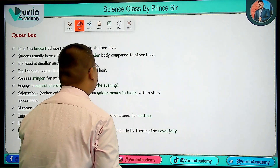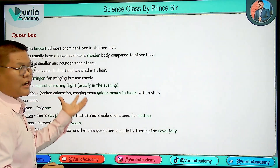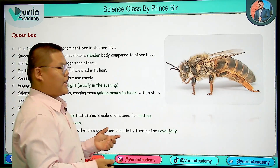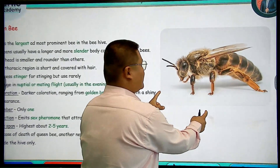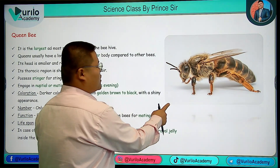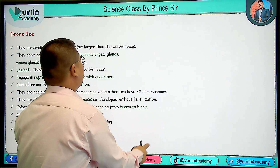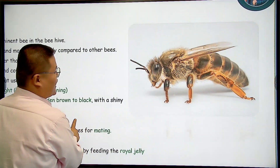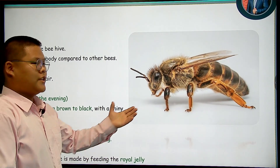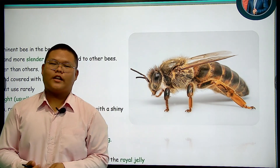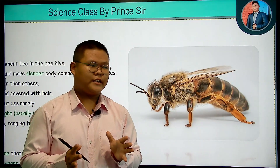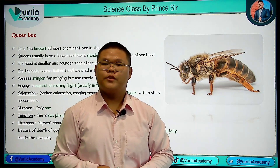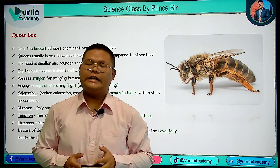The green colour highlighted points are the most important. This completes our discussion of Queen Bee. Our next lecture will continue. Till then, stay safe and stay happy. Thank you.